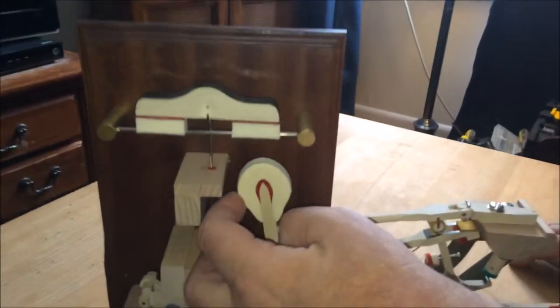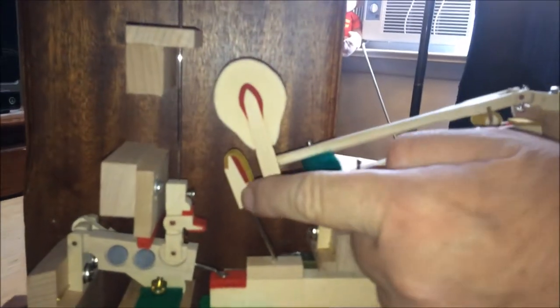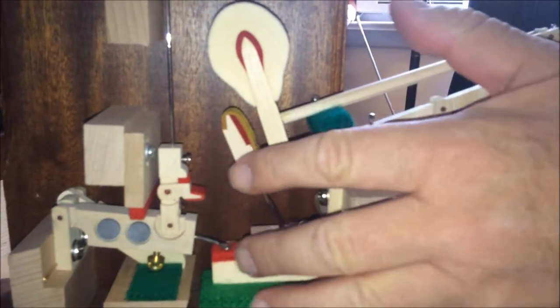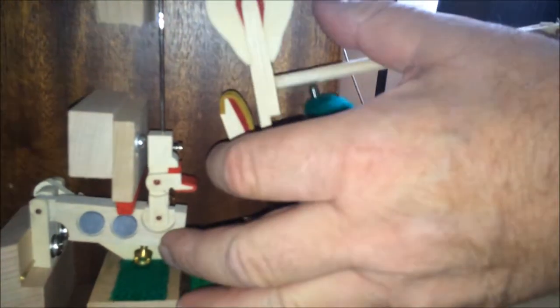Now if you take a look at the action here, we're talking about a grand right now. Here's your hammer, and here's your back check. What you want to do is align the hammer directly in the center of the back check.